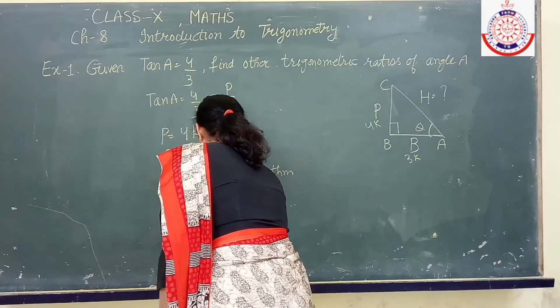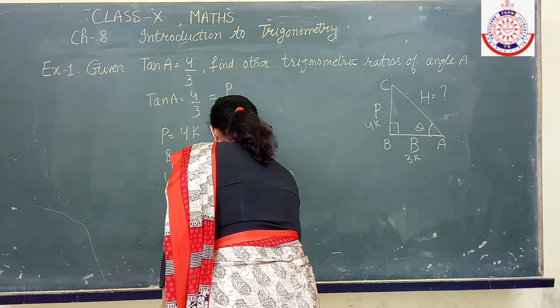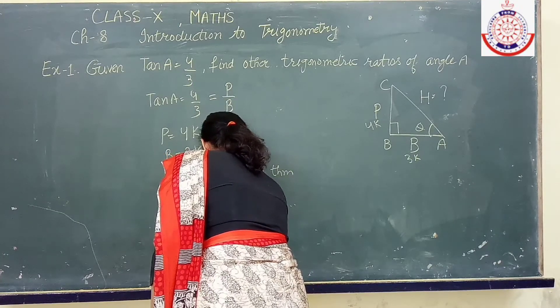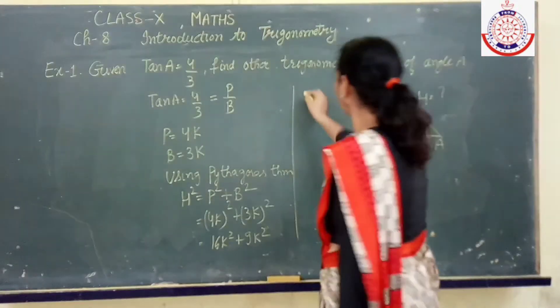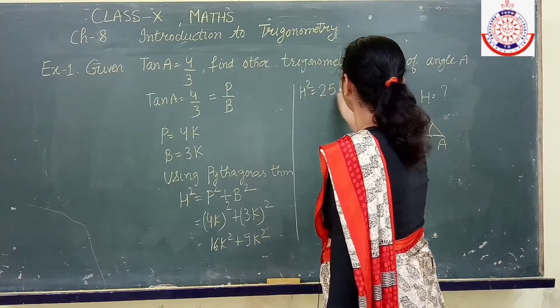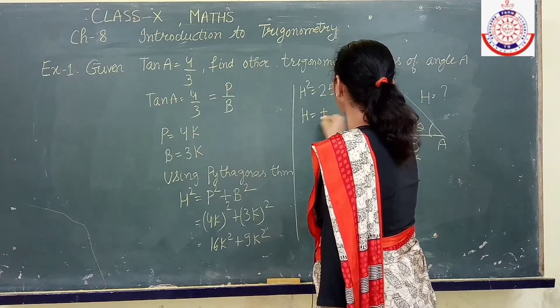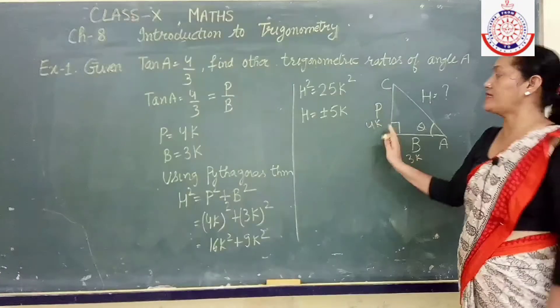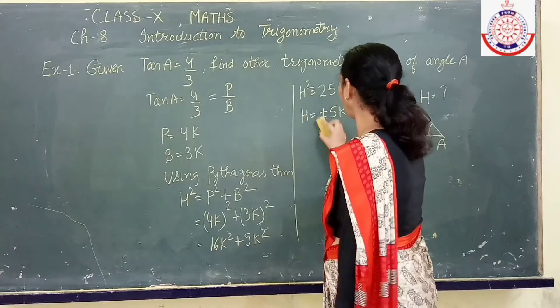16k square plus 9k square. We have got hypotenuse square as 25k square. So hypotenuse will be plus minus 5k. But since sides can't be negative, hypotenuse would be 5k.